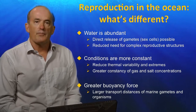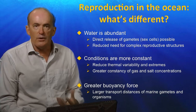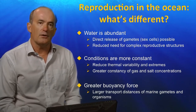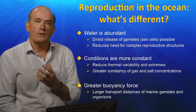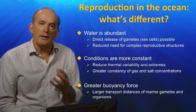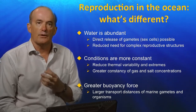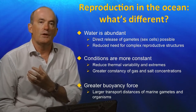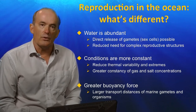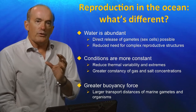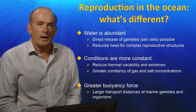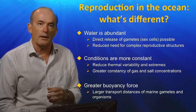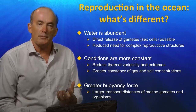Let's begin with this first question: what's the big difference between the reproduction of marine organisms versus those living on land? The first and most obvious difference is that water is far more abundant in the ocean than on land. As a consequence, the gametes or sex cells of marine organisms are often directly released into the water column. Because desiccation of gametes is not so much of a problem in the ocean, the complex structures or genitalia required for internal fertilisation and protection of early stages from desiccation are far less developed in marine organisms. Also, conditions are far more constant in ocean settings due to the greater thermal inertia of water compared to air, meaning oceanic environments are subject to far less variability and extremes of temperature.